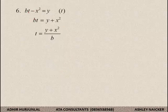Question number 6, BT minus X squared is equal to Y. Solve for T. Step number 1, negative X squared. Move it over to the other side. That it becomes positive X squared.